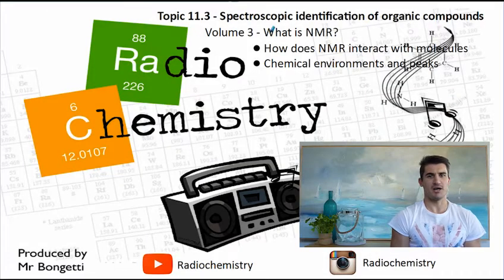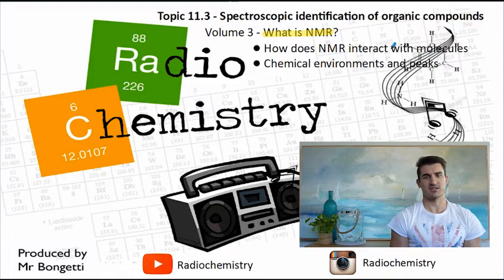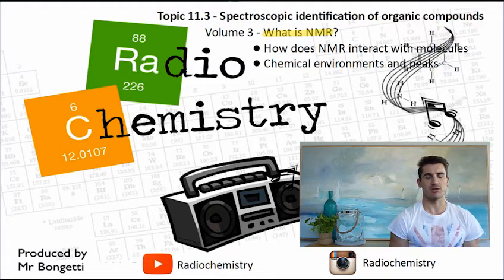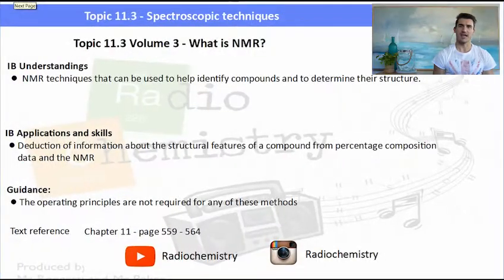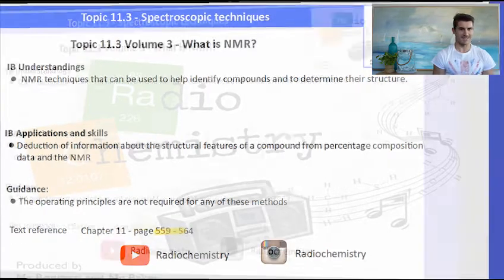So Volume 3, What is NMR? Nuclear Magnetic Resonance Spectroscopy. We look at how NMR interacts with molecules and we look at chemical environments and chemical shifts. Basically, we need to use NMR to determine the structure of a compound. Text pages 559-564, check it out.